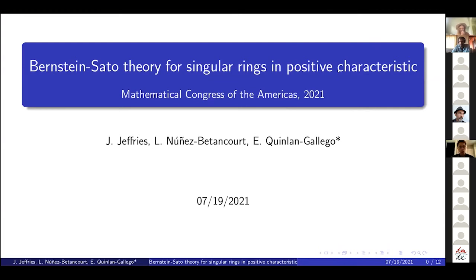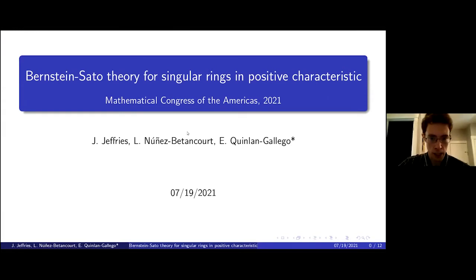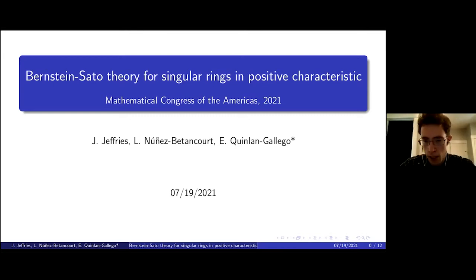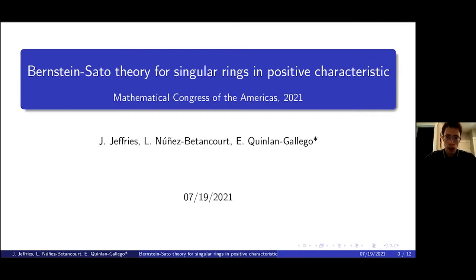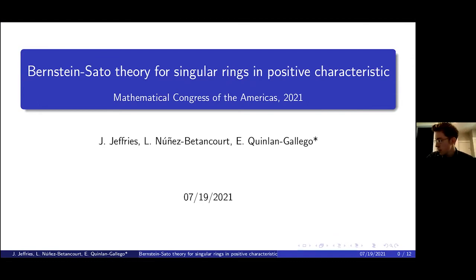First I would like to thank the organizers for putting together this session and for the opportunity to speak. What I want to talk about is kind of a modification of the theory of Bernstein-Sato polynomials, which already made a brief appearance in the previous talk. There have been recently two modifications to this theory: one to characteristic p and the other to singular algebras. This project is joint with Jack Jeffries and with Nunez-Betancourt. The outline of the talk is: first I'll review the classical theory, then I'll explain these two recent modifications, and then I'll explain our results.